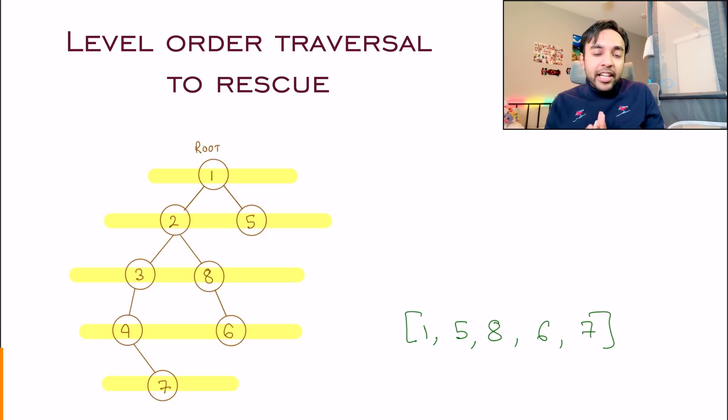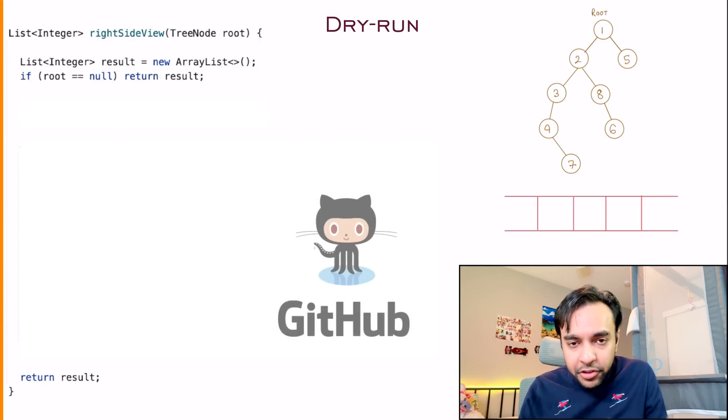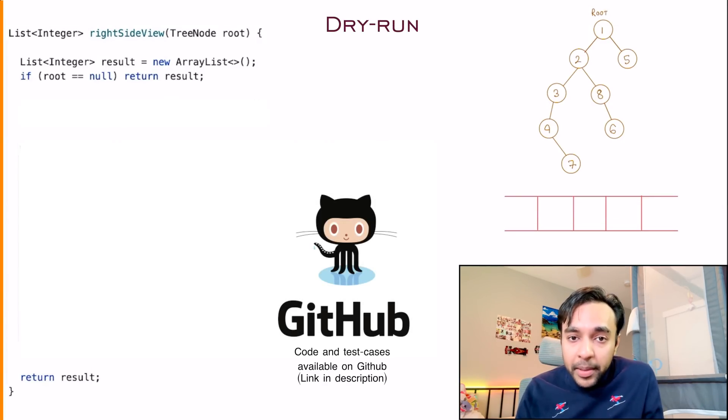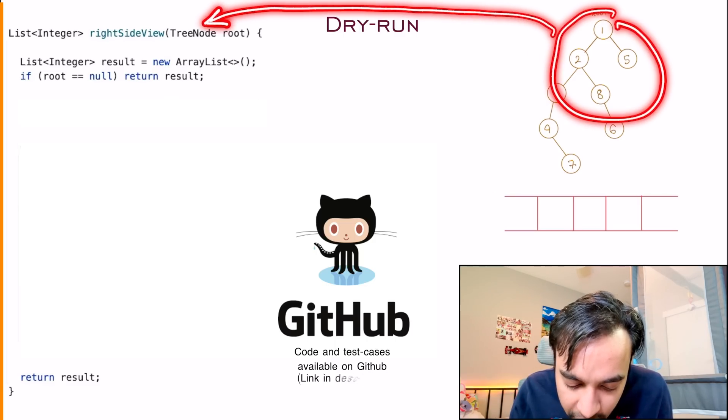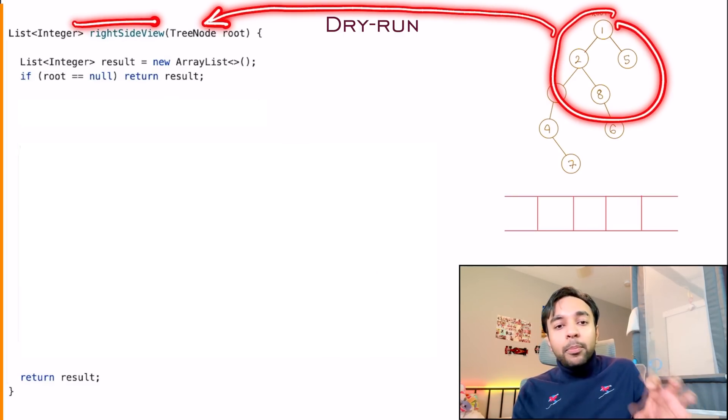If you're new to level order traversal techniques, I would highly recommend you to watch my original video first. Because over there, I go into more details of how can you implement it? How does it actually look? And what do each level actually mean? So if you're aware about that, this problem is really, really easy to solve. Now, based upon that understanding, let us quickly do a dry run of the code. On the left side of your screen, you will have the complete code to implement this solution. And on the right, I have the sample test case. And the root of the tree is passed in as an input parameter to the function.